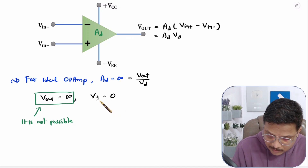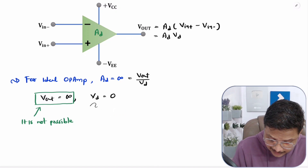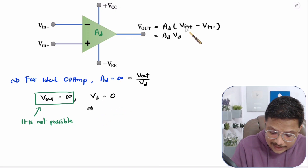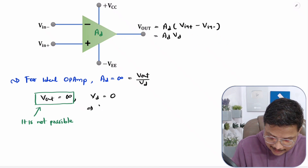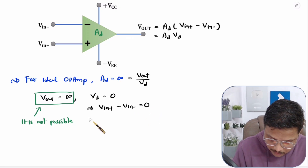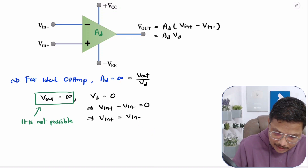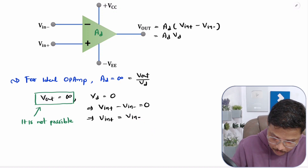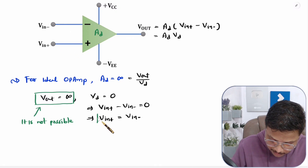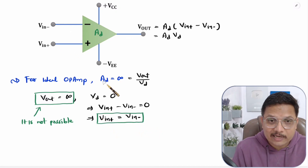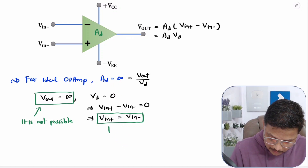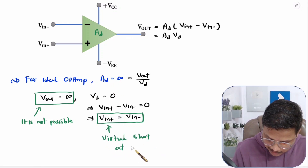So let us talk about the second possibility: V D equals zero. V D is V in plus minus V in minus. So you can say V in plus minus V in minus equals zero, which means V in plus equals V in minus — both inputs are at the same potential to achieve infinite differential gain. This is the virtual short at the input of the op-amp.